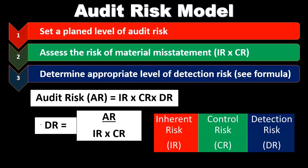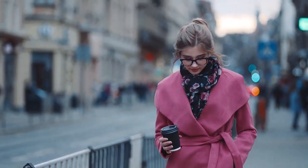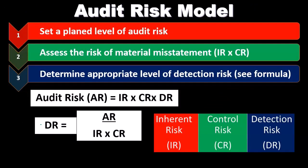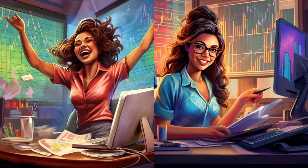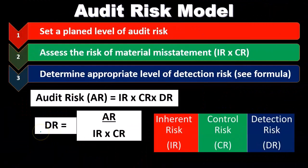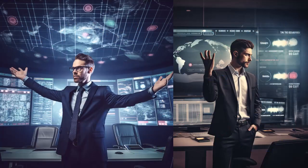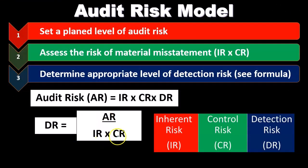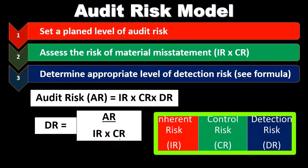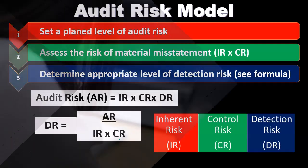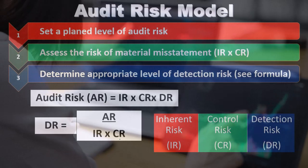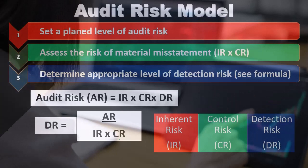The goal of varying detection risk is to put together audit procedures most efficiently. If we can rely on internal controls and we're in a less inherently risky situation, then we can perform fewer procedures — meaning detection risk actually goes up, but we're still okay given the sound environment. If we had good internal controls, the control risk would be low, meaning the risk that controls wouldn't catch an error is low.